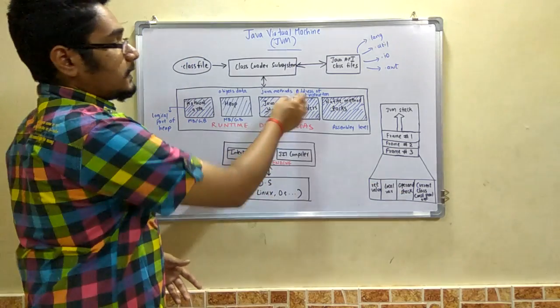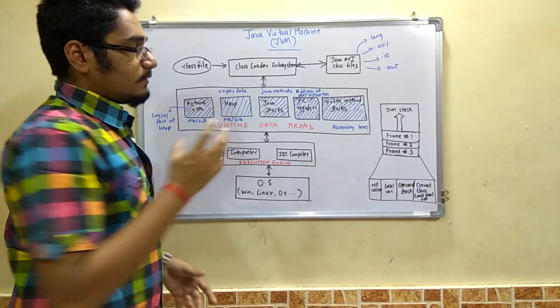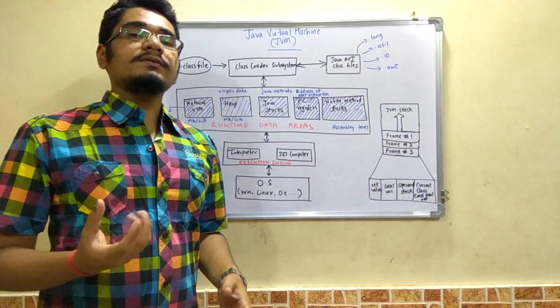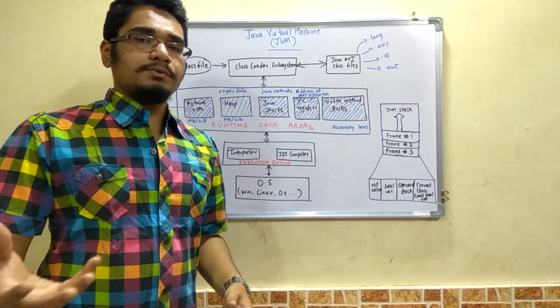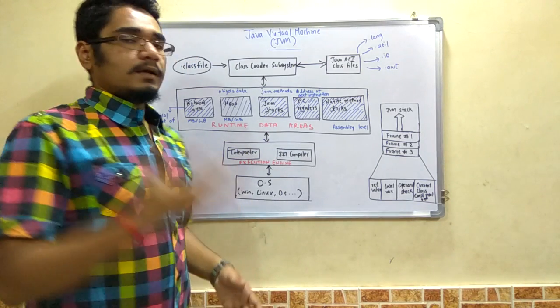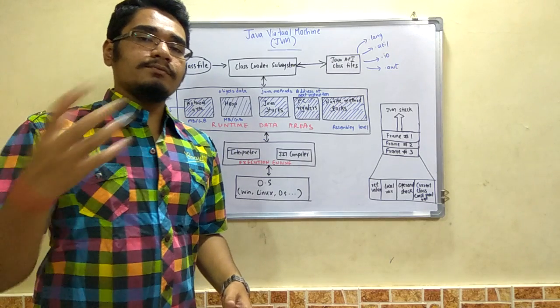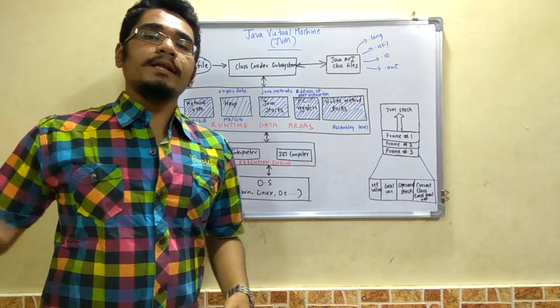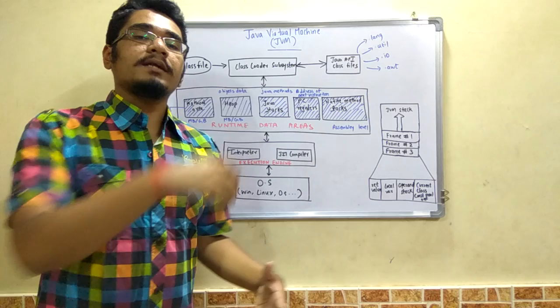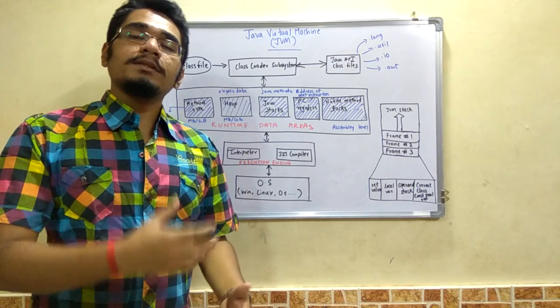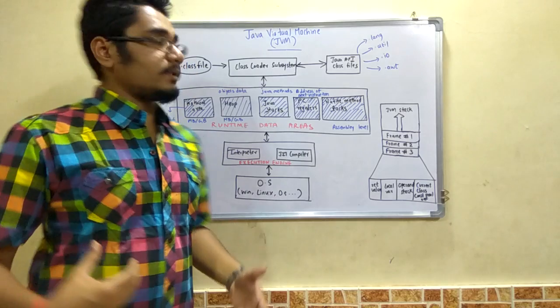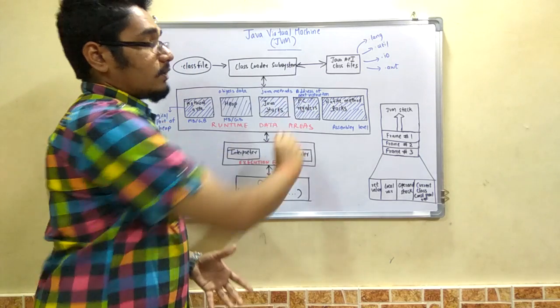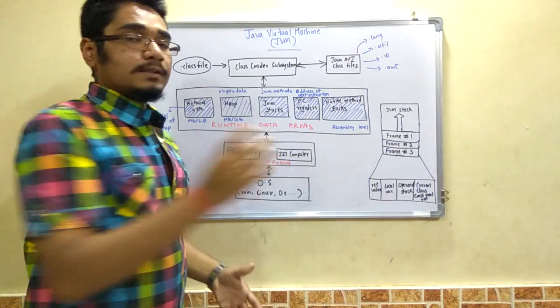Next is the program counter registers, that is the PC registers. So it gives the address of the next instruction to be executed, or the sequential execution of the program. That's how it maintains the flow of the program - from main it will call some other method, that is x method, from x method will call y method, and eventually it will go to the z method. So that address or the flow is maintained by using the PC registers.